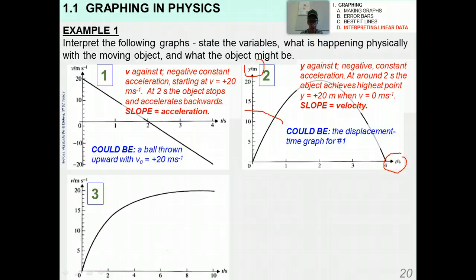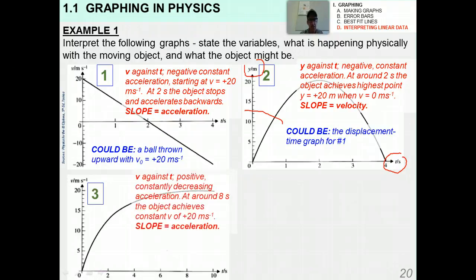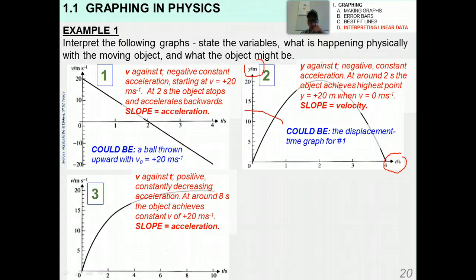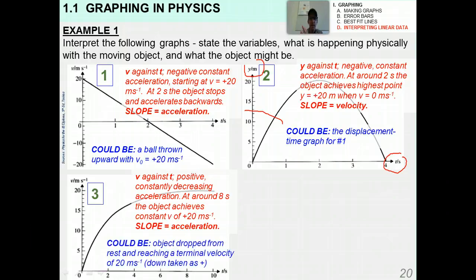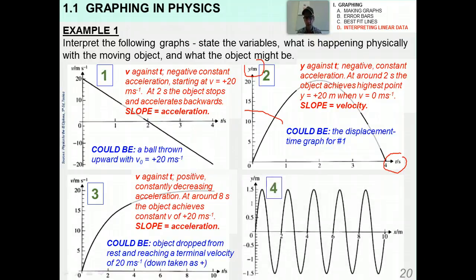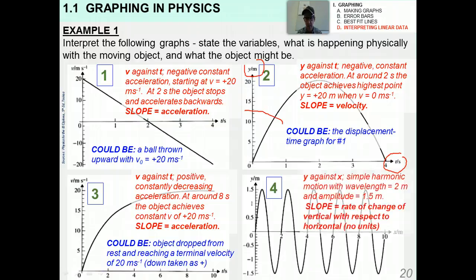Graph three is another velocity-time graph where the acceleration is always positive but constantly decreasing. At around eight seconds the object achieves a constant velocity of about 20 m/s. This could be an object dropped from rest reaching a terminal velocity of 20 m/s at around eight seconds.